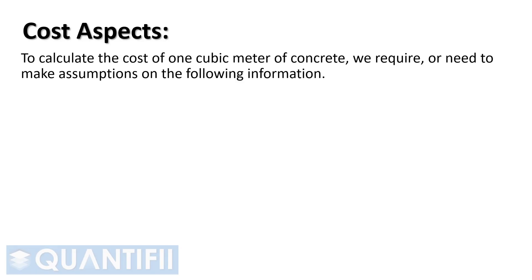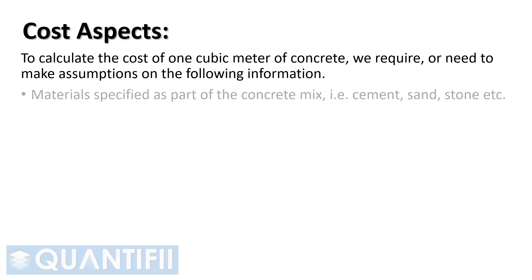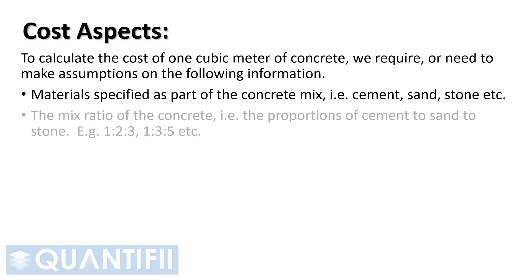To calculate the cost of 1 cubic meter of concrete, we require or need to make assumptions on the following information: materials specified as part of the concrete mix, that is cement, sand, stone, etc.; the mix ratio of the concrete, that is the proportions of cement to sand to stone, for example 1 to 2 to 3, or 1 to 3 to 5, etc.